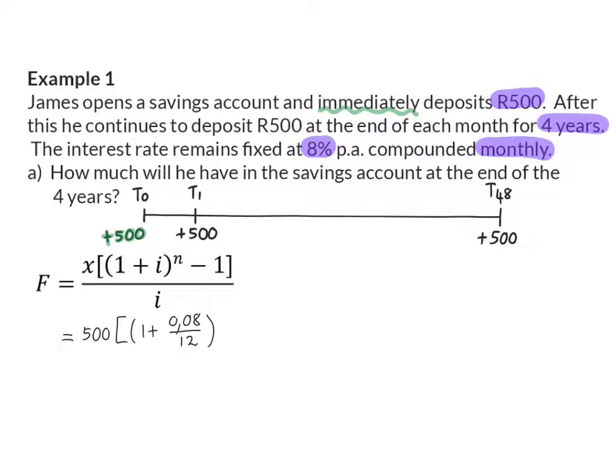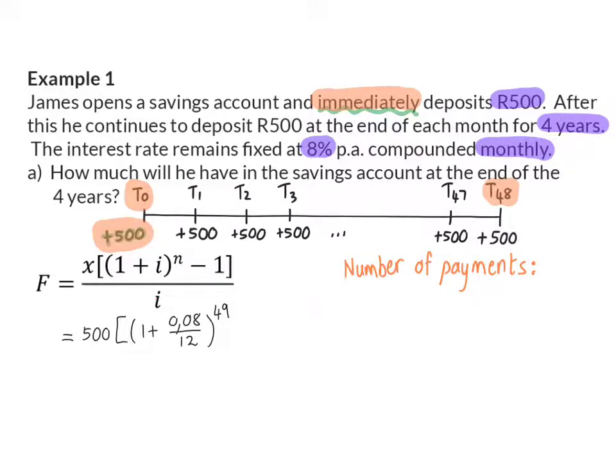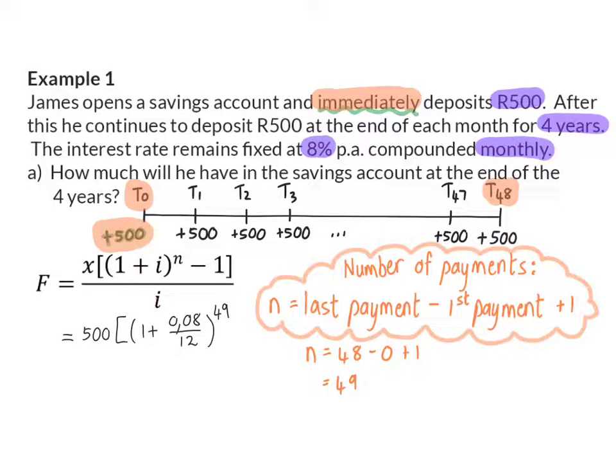The interest rate is 8%, and it is compounded monthly. And now, the important part is N, the number of payments. Here, we have a period of 48 months. Because he made a payment at the end of each month, he made 48 payments. But he made another extra payment at the beginning of the first month, because he started paying immediately. This means that, in total, he made 49 payments. You can also remember the following formula to determine the number of payments, and that is taking the last payment minus the first payment plus 1. And that plus 1 comes from the fact that you want to include the first and the last payment.